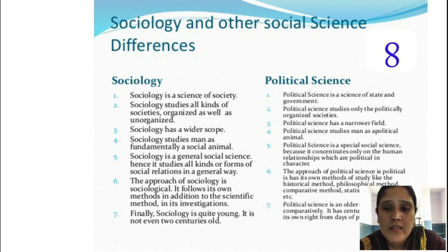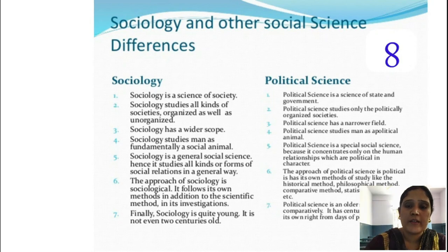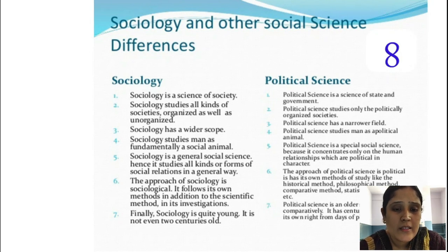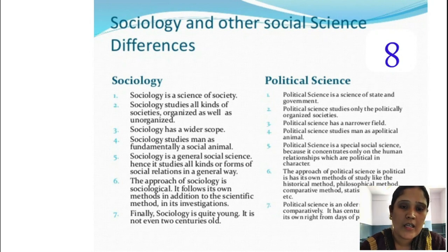Political science studies about man as a political animal, whereas sociology says that man is fundamentally a social animal. Aristotle said that man is both a social and political animal. Without forming society, man cannot live. When society comes into existence, political science plays an important role for the development of the state. Political science especially deals with social sciences as it studies human relations and what political roles are to be played in society, while sociology deals with all kinds of social relations in a general way.